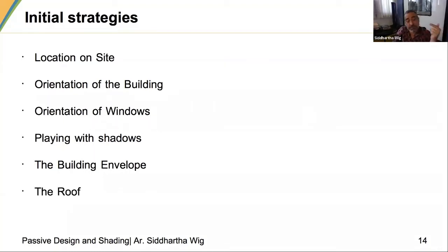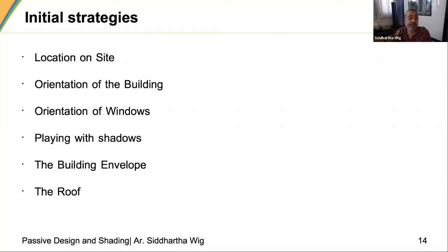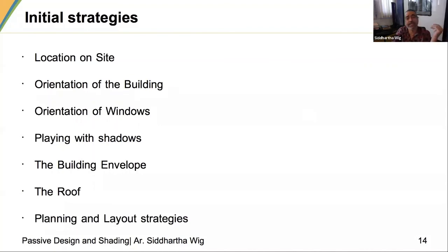The roof and building envelope are not static things — over the year, the amount of radiation falling on them varies. For example, in Chandigarh the south face gets more winter sun, but in summer the south wall is no longer the most affected surface; the roof all of a sudden becomes more critical. Your strategies need to account for this, and then comes planning and layout strategies — building spacing, daylighting and ventilation.